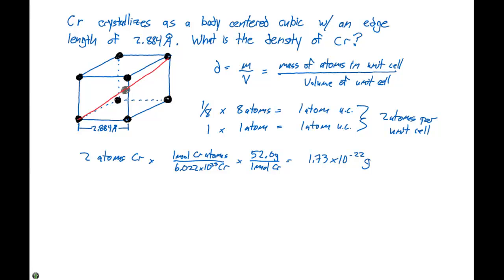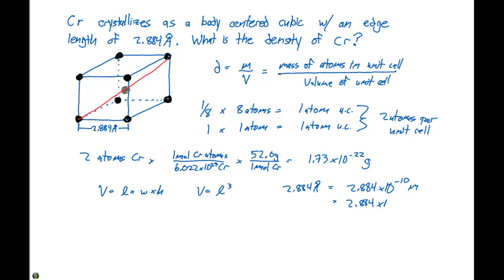We only have two chromium atoms, so that mass is very small. Now we need to find the volume of the unit cell. Volume equals length times width times height, and in a cube, volume is the edge length to the third power. The edge length of 2.884 angstroms equals 2.884 times 10 to the minus 8th centimeters, and we cube that to get the volume.